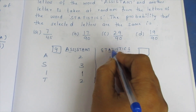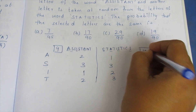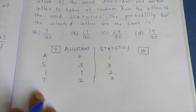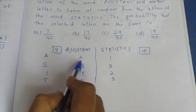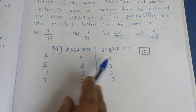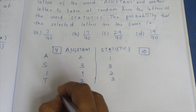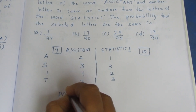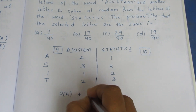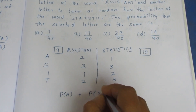If I count STATISTICS: 1, 2, 3, 4, 5, 6, 7, 8, 9, 10 — total is 10. Now, the probability P = P(A) + P(S).